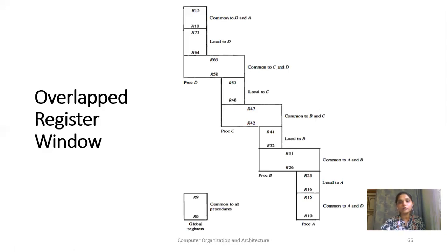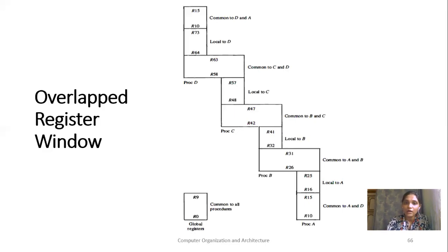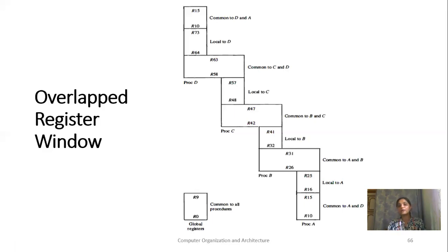This type of overlapped register window is used in Reduced Instruction Set architecture. Whenever you require to pass some data to the next procedure, you store this data into the common registers. Data not required to be transferred to another window is stored in local registers, and data required to be available in all windows is stored in the global registers.